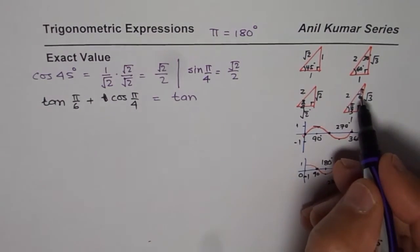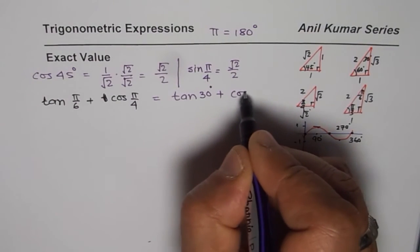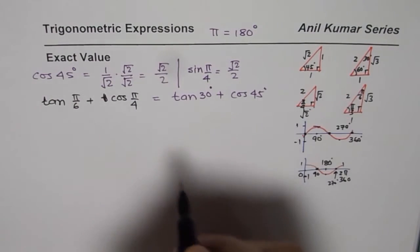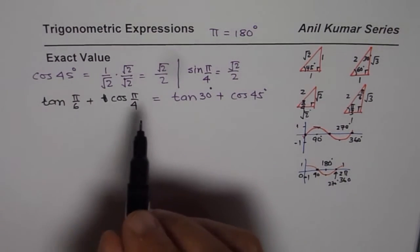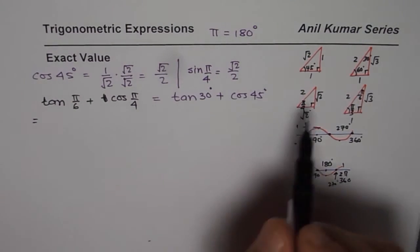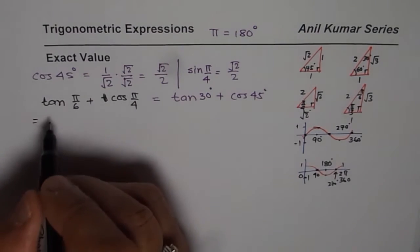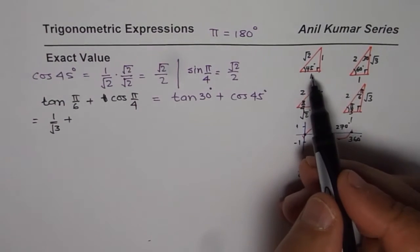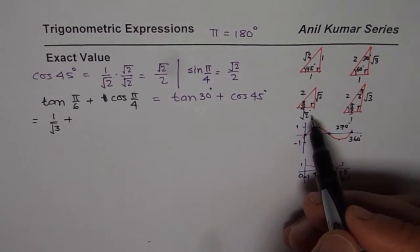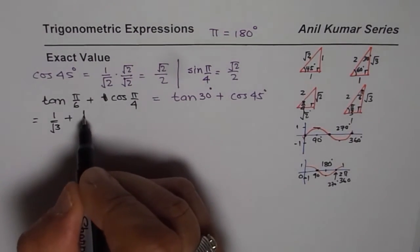Can you evaluate this and give me the exact value? Well, the exact value for tan of 30 degrees, let me write here. Read from here. 1 over square root 3. So, we have 1 over square root 3 plus cos of this. You could use this triangle or the other one. So, let me make things complicated. Use this one. So, we say 1 over square root 2.